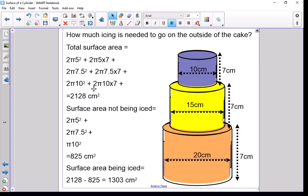If you were to work that all out, you'd find the total surface area before you take away any bits in between or the bottom would be 2,128 centimeters squared.